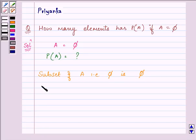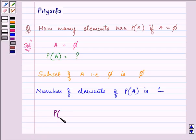So, we can say that the number of elements of power set A is 1. So, the answer is P of A has one element in it.